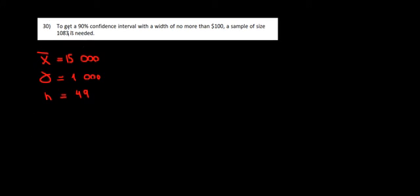Let's have a look at question 30. To get a 90% confidence interval with a width of no more than $100, we need to find the required sample size. We're looking at a maximum width of $100.